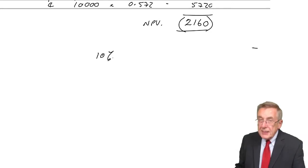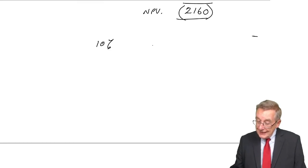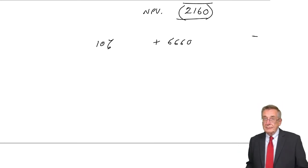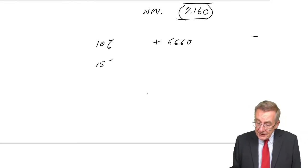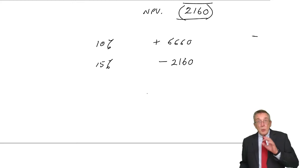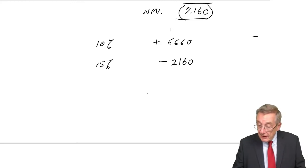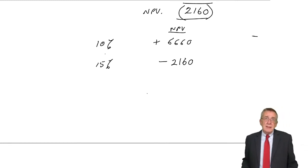We calculated the net present value at 10%, and at 10%, we got plus 6,660. We then guessed a second interest rate, 15%, and we got minus 2,160. We want an NPV of zero. It's between the two. The interest is somewhere between 10 and 15.